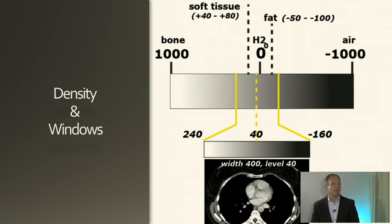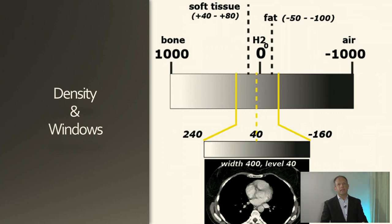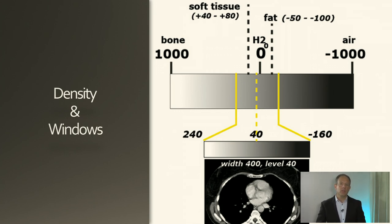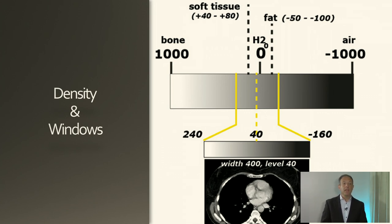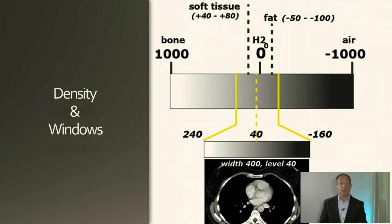Everybody's heard of fat stranding. What is fat stranding? When fat gets edematous — when it's inflamed and angry — it takes on a little bit more of the density of water, becomes a little bit more dense. So stranding is something we see because the grayscale has embraced a little bit more of the water than fat, giving differential contrast on the CAT scan. Windowing correctly will make the difference between seeing something and missing it. Be comfortable with windowing and use the correct windows.